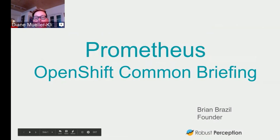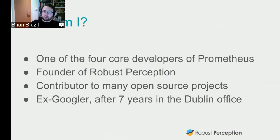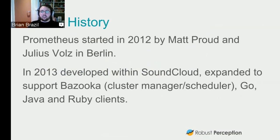I'm one of the four core developers of Prometheus. I founded Robust Perception, which does consulting and support for open source. I've contributed to many open source projects over the years and worked at Google for a while here in Dublin. Prometheus was founded in 2012 by Matt Proud and Julius Volz, who were located in Berlin at the time. In 2013 they took it into SoundCloud, expanded to support Bazooka — which you can consider similar to OpenShift — and added instrumentation clients for Go, Java, and Ruby.